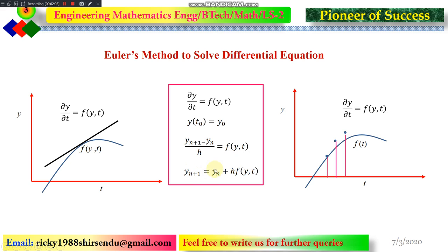So t_0, y_0 is known. You put this value of y_0, so you can get y_{n+1}. When y_n equal to 0, that means the value of y_1 can be calculated if the value of y_0 is known. So once we put y_0, we get the value of y_1.